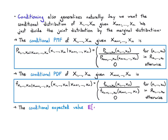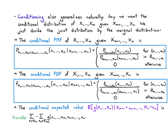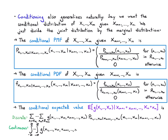For the conditional expected value, if you want the average of a function conditioned on some random variables taking some values, you just average that function over the values you don't observe — x1 up to xm — weighted by the conditional PMF in the discrete case, or by the conditional PDF in the continuous case. Discrete: add up the function weighted by the conditional PMF. Continuous: integrate the function weighted by the conditional PDF.